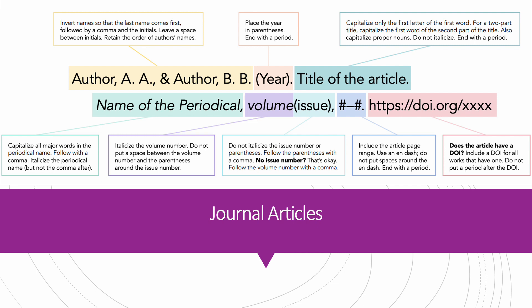Next is the volume — italicize the volume number. Do not put a space between the volume number and the parenthesis around the issue number. Do not italicize the issue number or its parentheses. Follow the parenthesis with a comma. If there is no issue number, follow the volume number with a comma. Include the article page range using an en dash with no spaces around it. End with a period. If the article has a DOI, include it for all works. Do not put a period after the DOI.